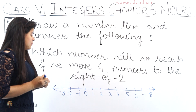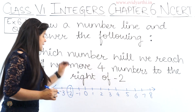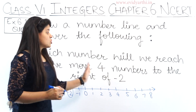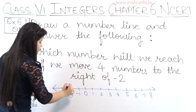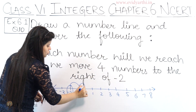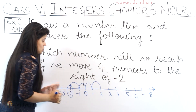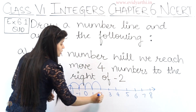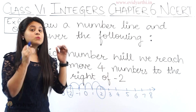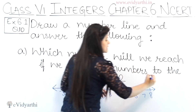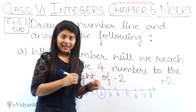Now we have the minus 2 point. This is minus 2. Now you have to move 4 numbers to the right side: 1, 2, 3, 4. After 4 numbers we have reached the right side. Number 2 means positive 2. So the answer will be plus 2.